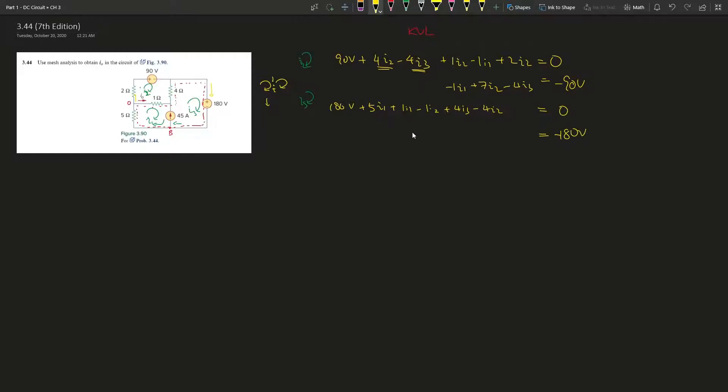Alright, simplify and negative 180 volts, and I1 has 1 and 2, so it would be 6I1 minus 5I2, 1 and 2, and then I3, there's only 1, so plus 4I3.